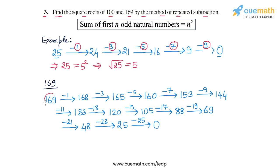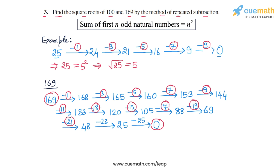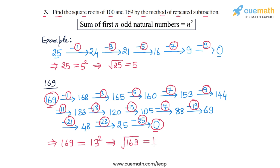So from 169 we have gone to 0 by subtracting these successive odd natural numbers. Let's count how many numbers we subtracted: 1, 2, 3, 4, 5, 6, 7, 8, 9, 10, 11, 12, and 13. So we subtracted the first 13 odd natural numbers from 169 to get to 0. This means that 169 is the sum of the first 13 odd natural numbers, and hence 169 is equal to 13 squared. From here we can conclude that the square root of 169 is equal to 13.